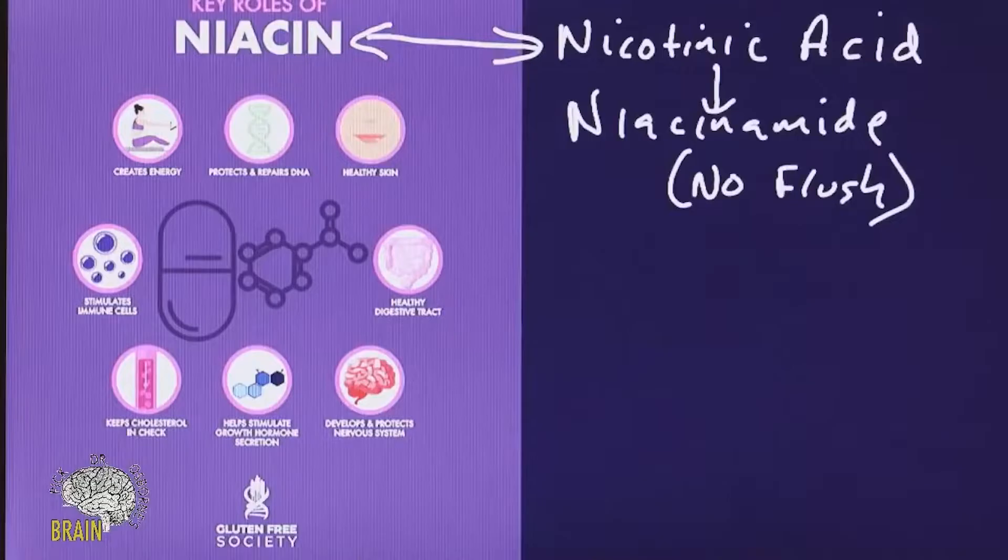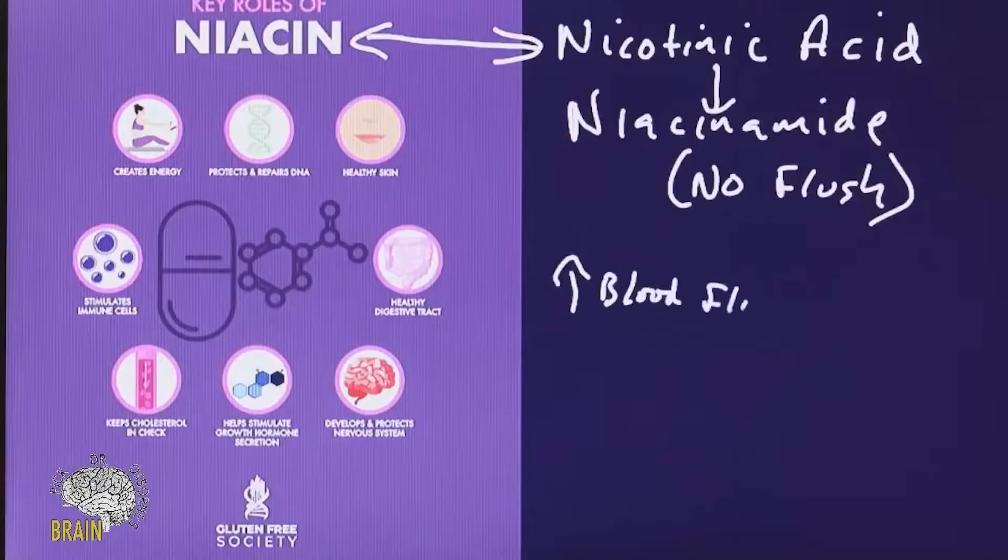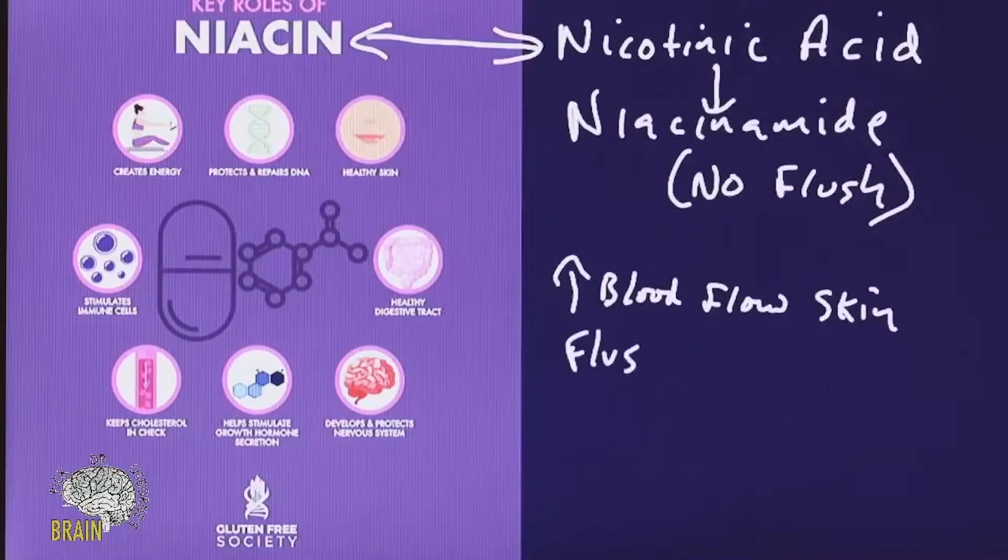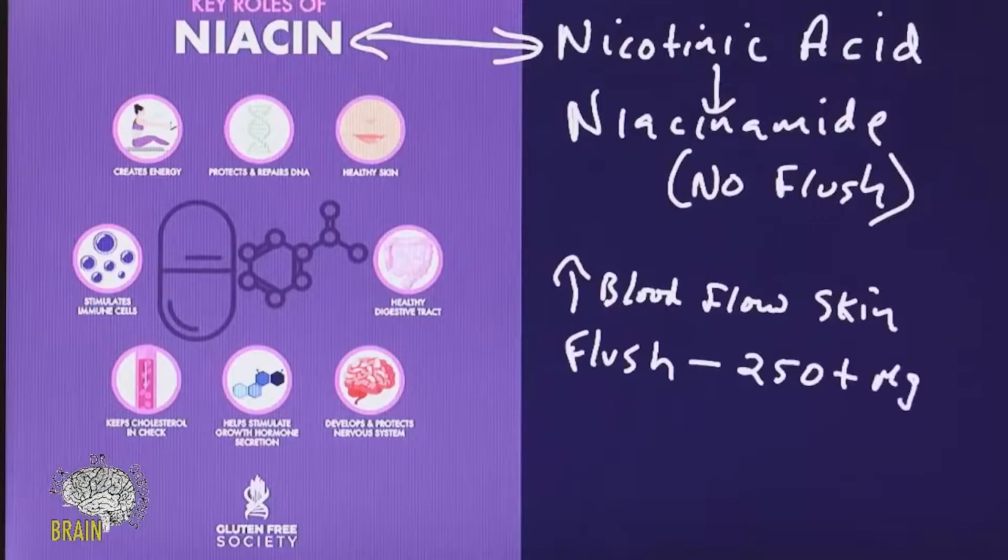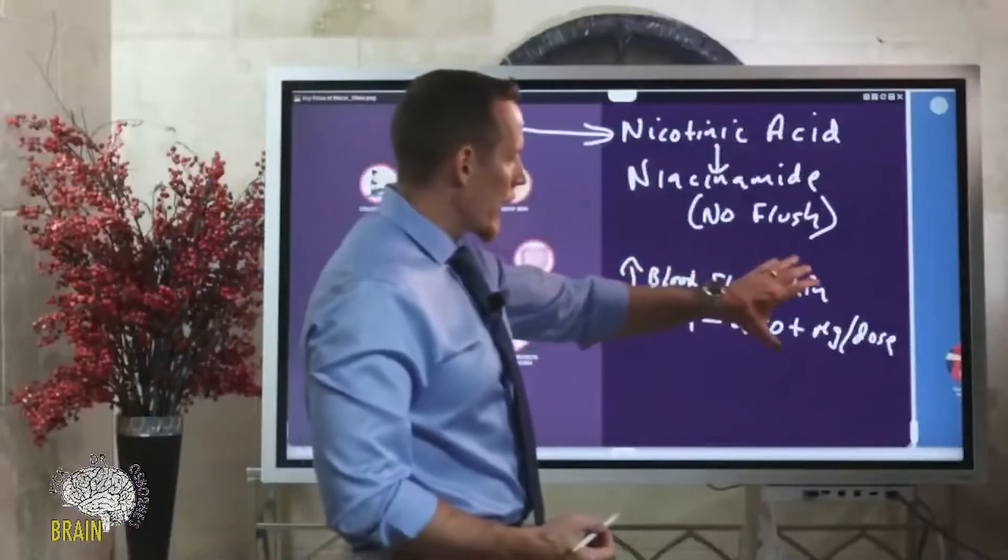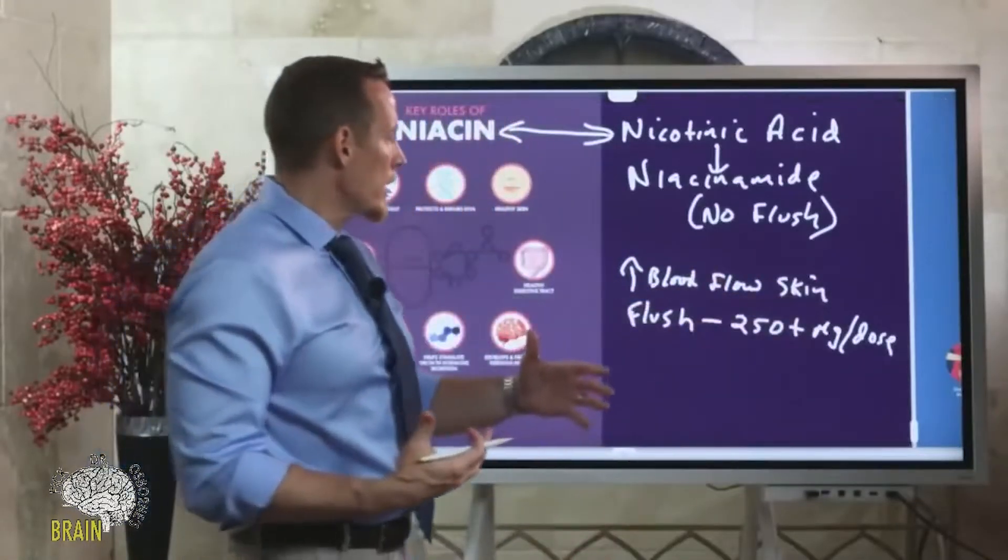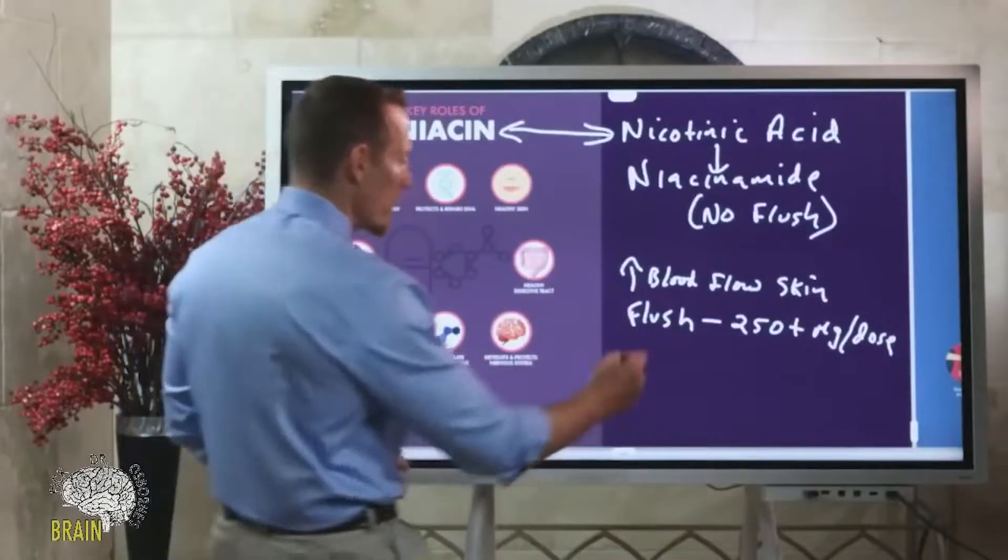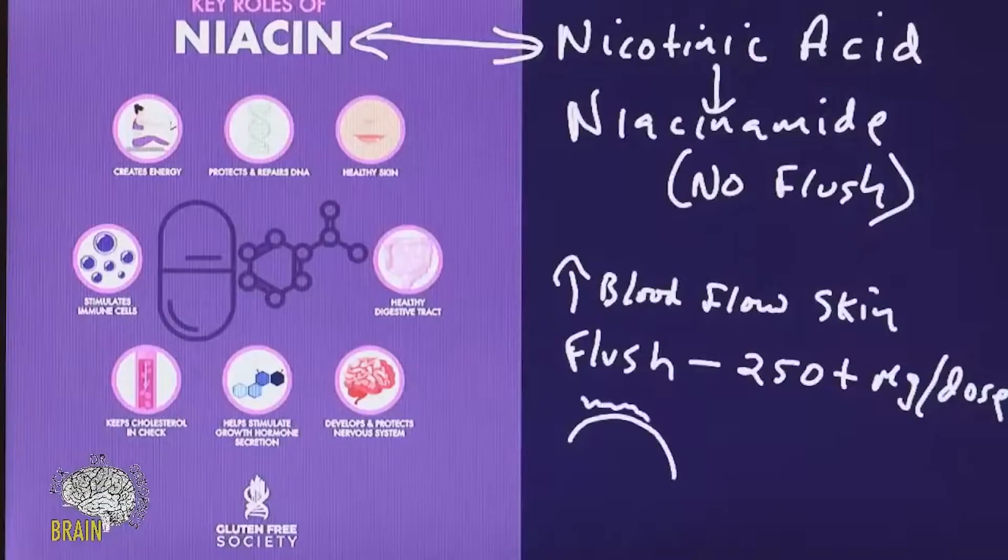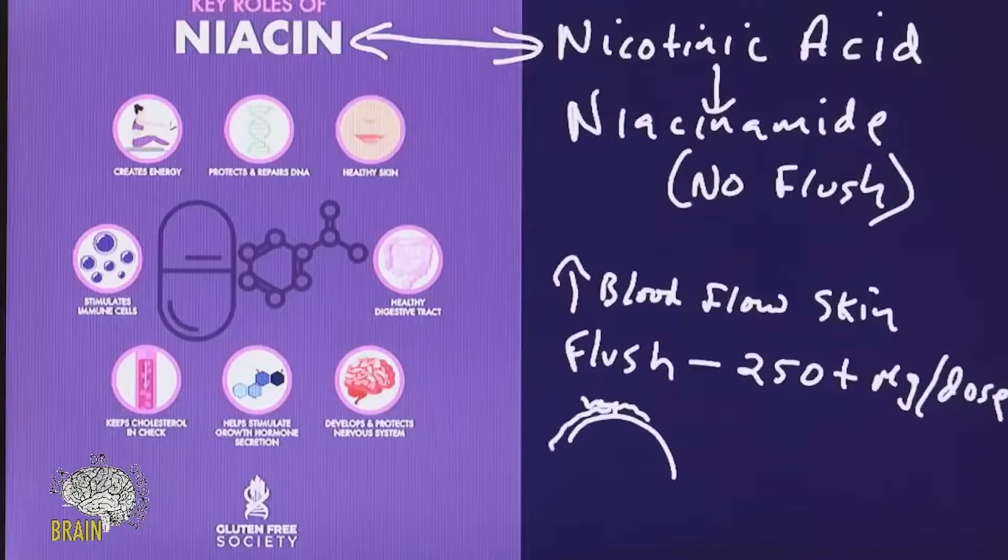If you've ever taken niacin, one of the things it does is increase blood flow, particularly to the skin. The niacin flush happens when you get upwards of 250 plus milligrams per dose of niacin. It can cause your body to start to flush, and that flush starts in the crown of your head and drapes down.